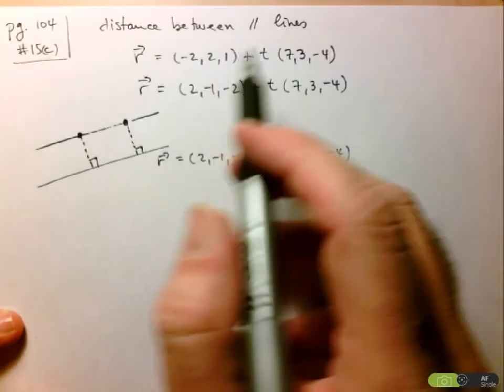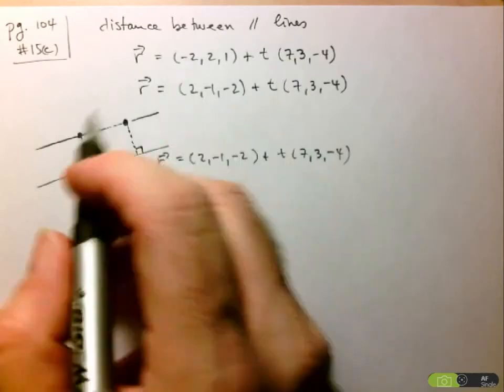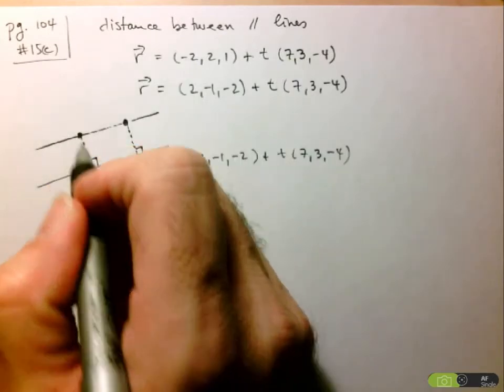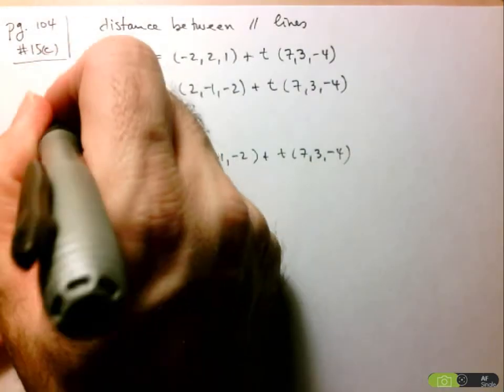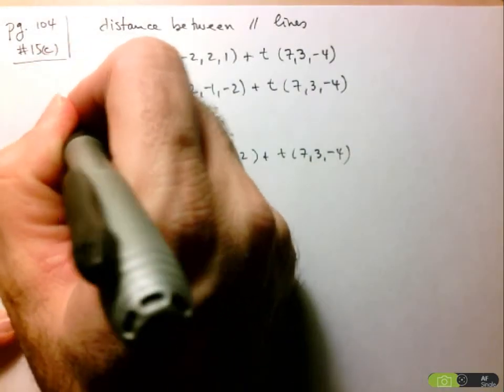All we need is any point on this line here to use to find that distance. So why don't I use point (-2, 2, 1). So I'm going to use this point here, (-2, 2, 1).